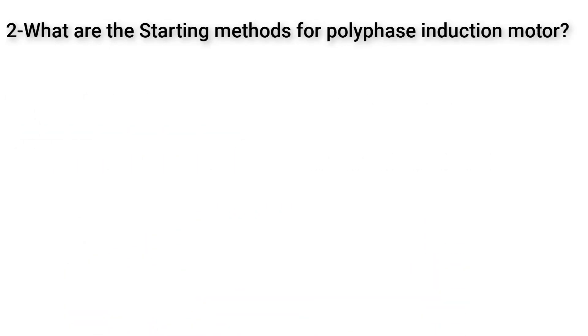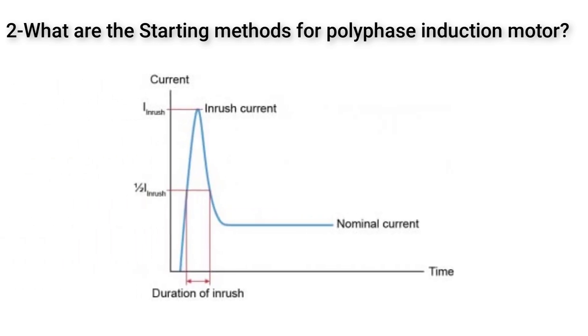The second question here is what are the starting methods for three-phase induction motors? Well, we use different methods of starting induction motor to reduce the applied voltage on the motor windings because any induction motor suffers from high inrush current at starting. This inrush current is equal to 7 to 11 times the full load current which is too much and will cause high voltage drop which will cause under voltage on the system.